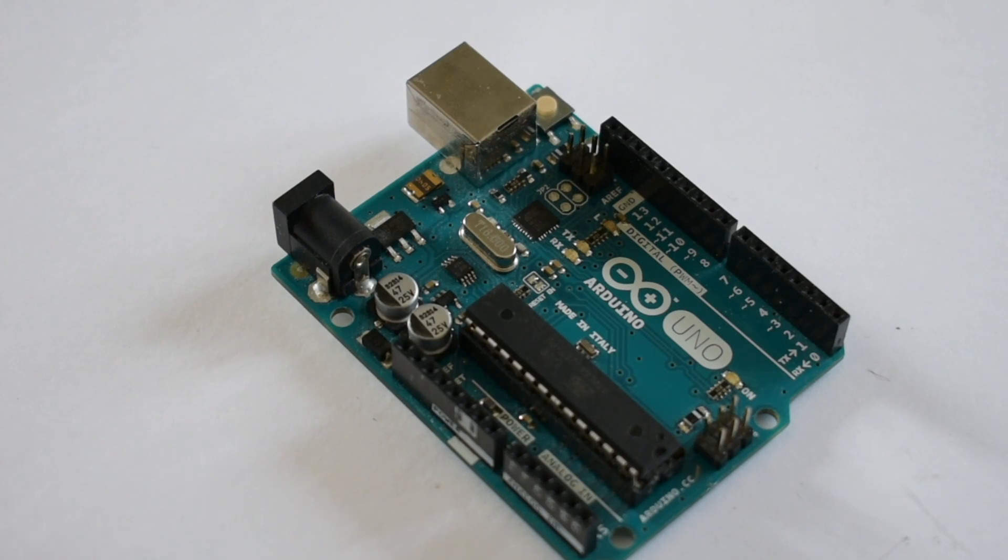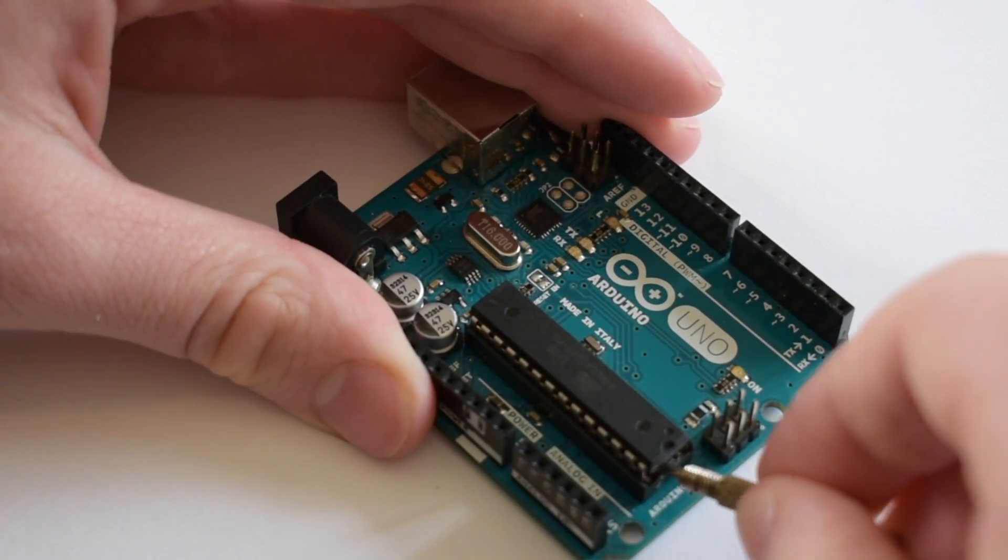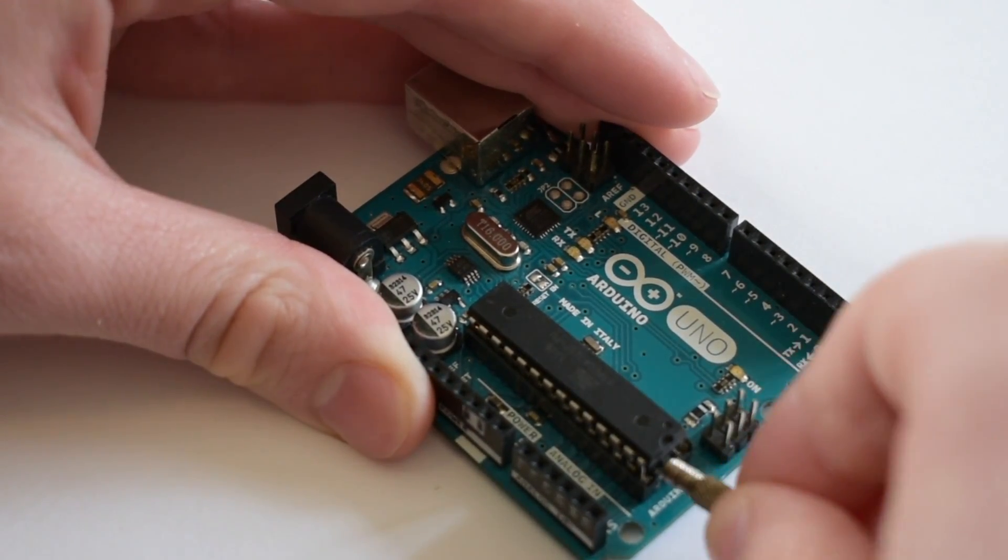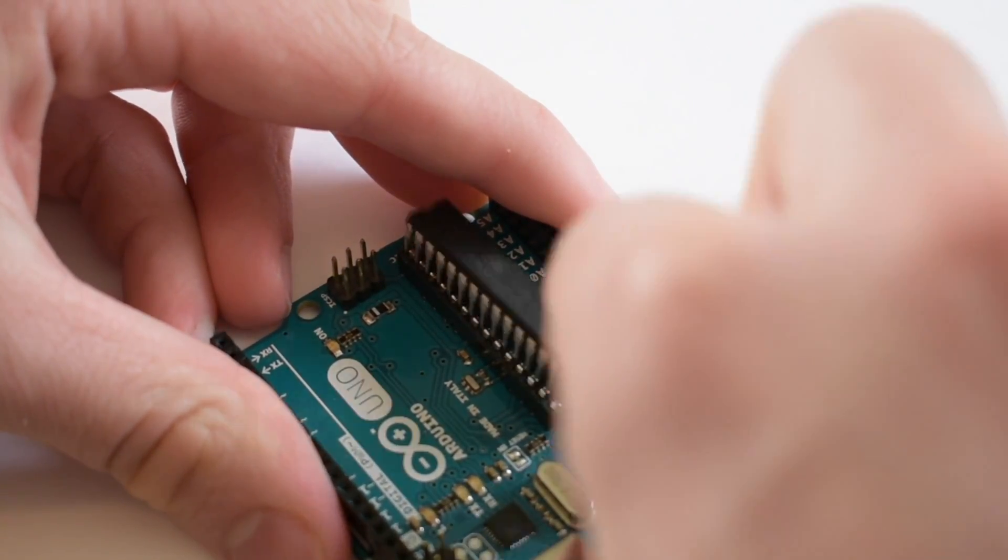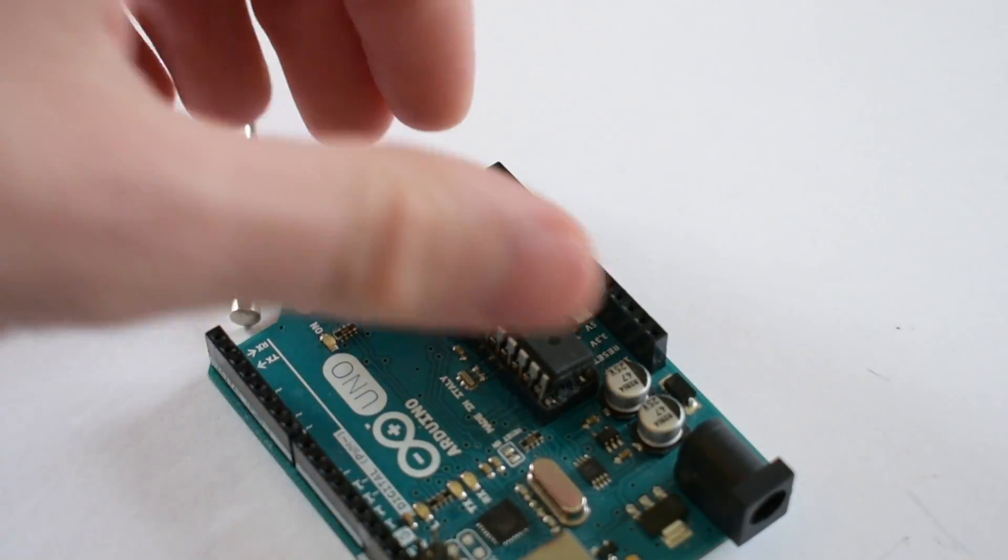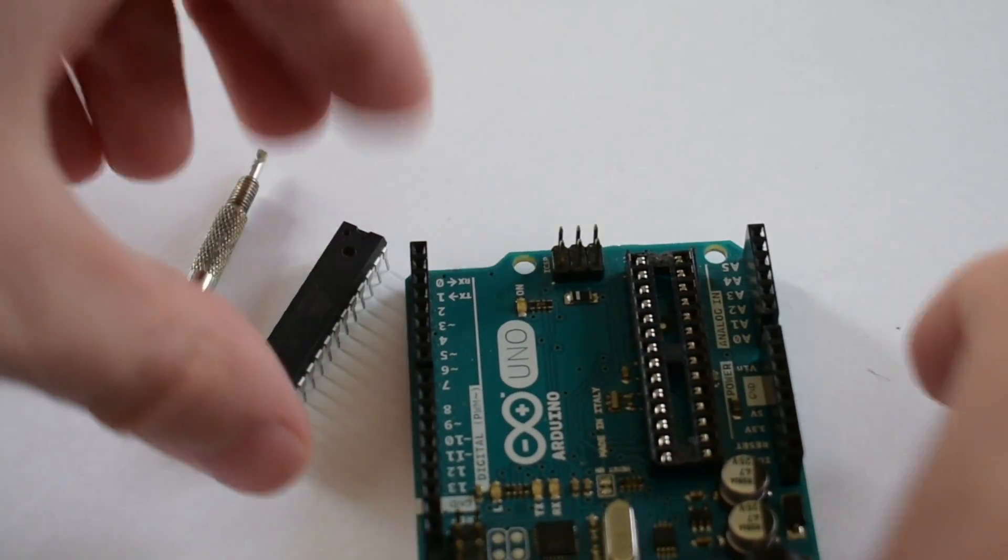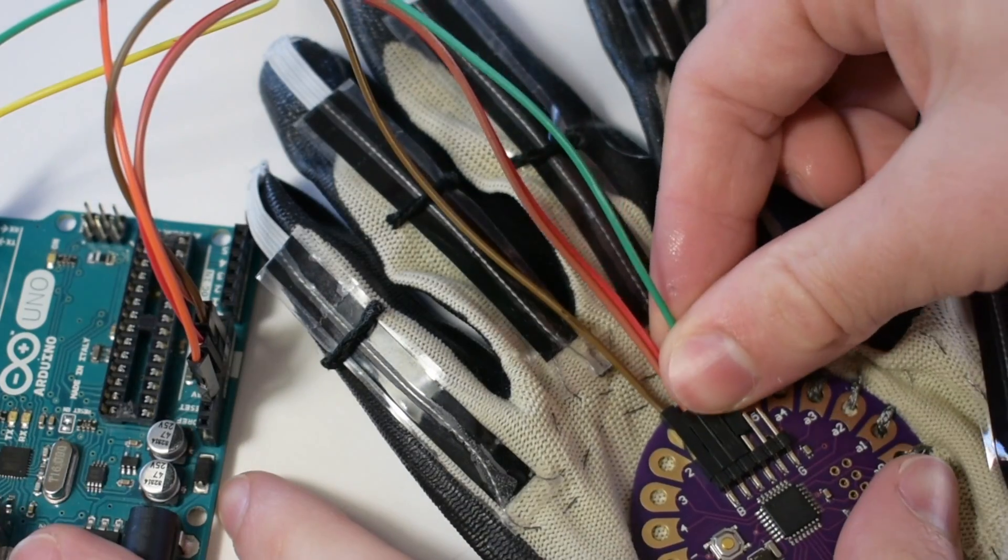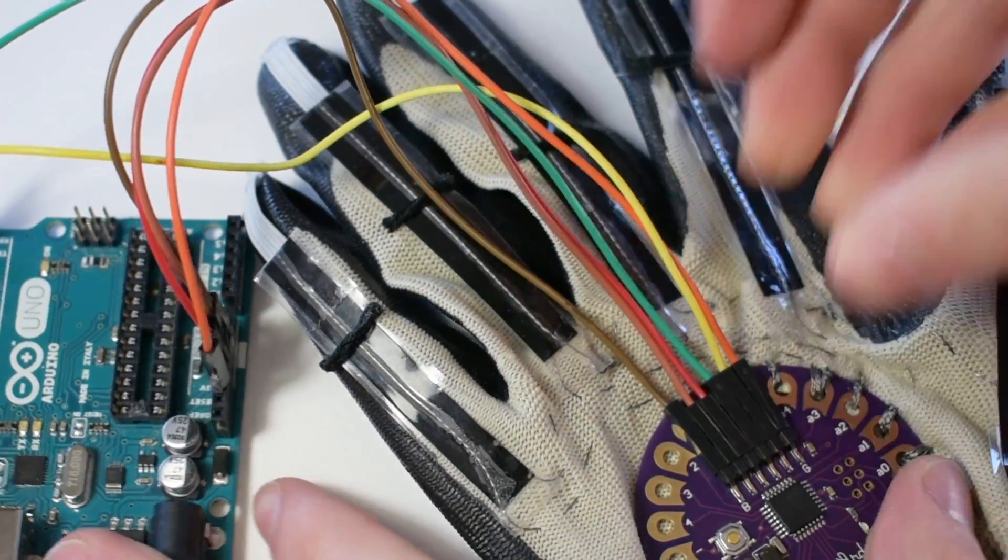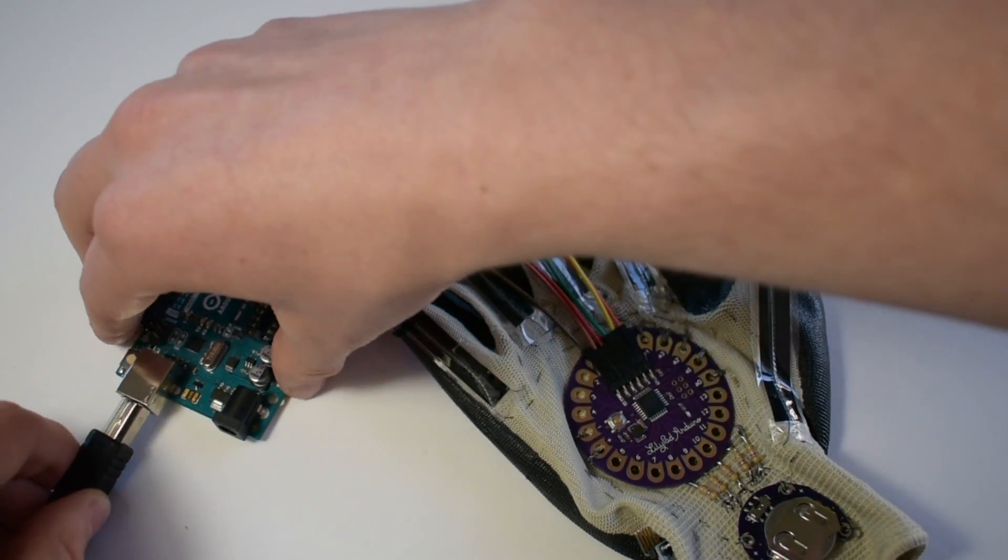Since the lily pad doesn't have a USB port, in order to connect the board to a laptop, you have to connect it via the Arduino Uno. First remove the ATmega 328p chip with a screwdriver. This stops the computer from programming the Arduino Uno, and instead programs the Arduino lily pad. Steps detailing the wiring can be found in the description below.